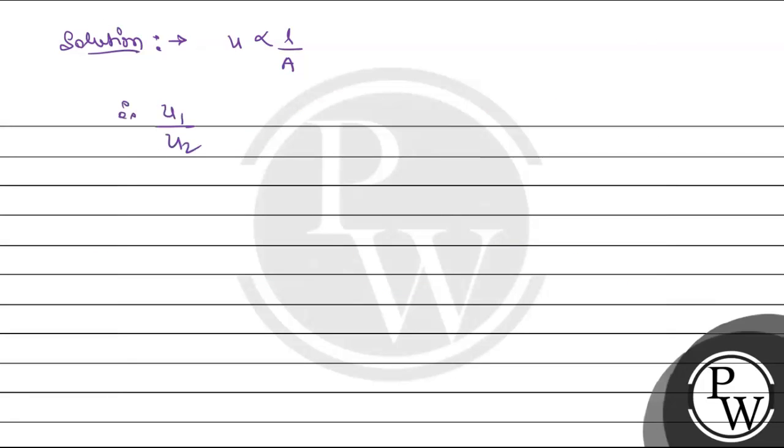we have u1 upon u2 is equal to l1 upon a1 divided by l2 upon a2. So we have l1 upon l2 into a2 upon a1.